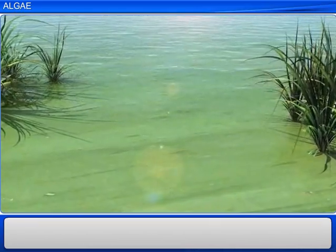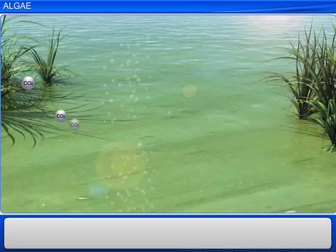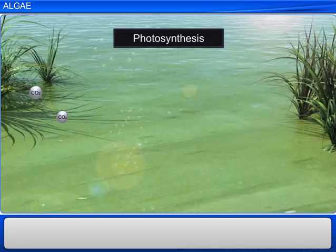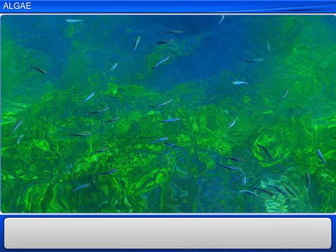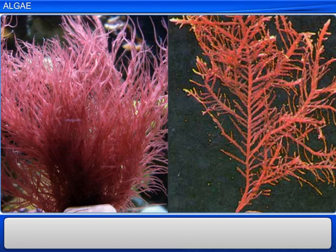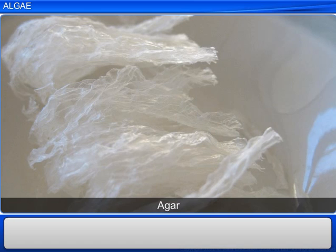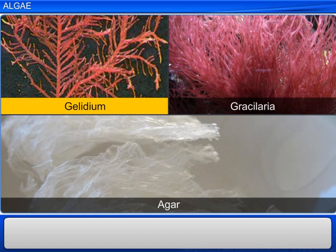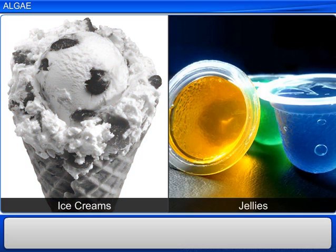Algae perform a wide variety of functions. They carry out carbon dioxide fixation and also increase the level of dissolved oxygen in their immediate surroundings through photosynthesis. They produce energy-rich compounds that form food for aquatic organisms. Algae are also used for commercial purposes — for instance, agar, obtained from Gelidium and Gracilaria, is used to prepare ice creams and jellies.